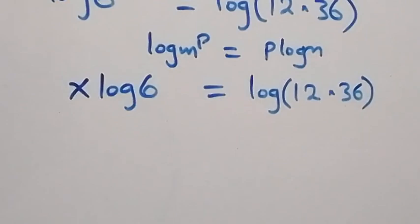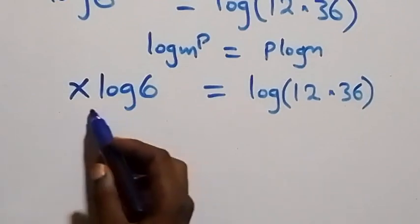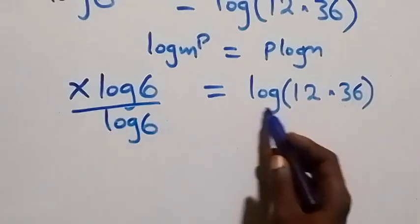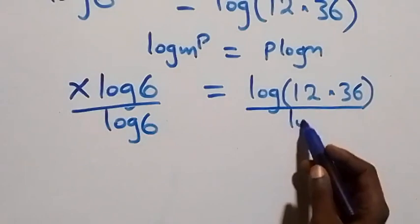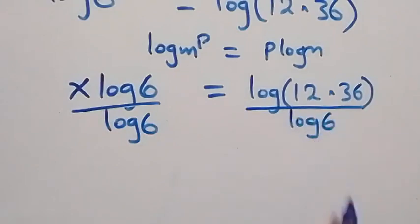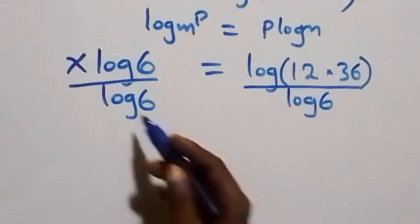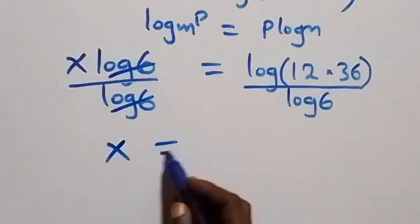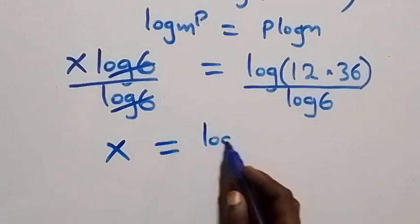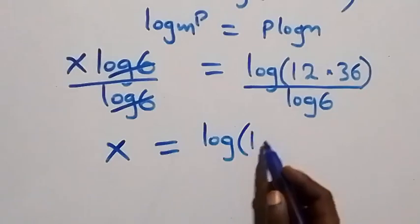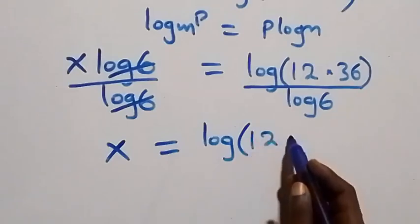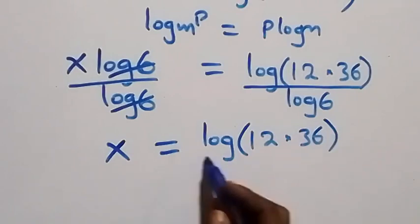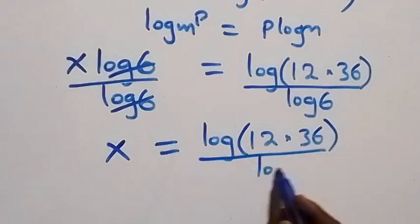Next, we divide both sides by log 6. The log 6 terms cancel each other, and we have x equals log of 12 times 36, all over log 6.